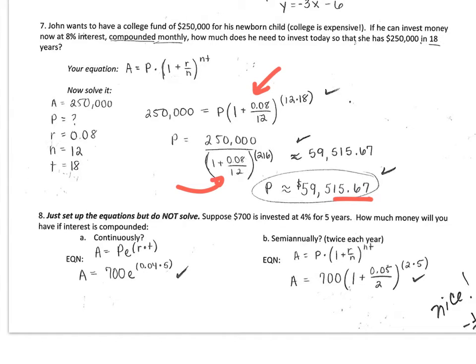For the last piece, you did not have to solve anything. You just wanted to go ahead and set up the equations. This was me testing, do you know which equation to use? For continuously, you use the one that has the base e in it, and P for principal 700, R and T for the other ones. Semi-annually, it even says twice a year, so you knew that that was a 2. For monthly it'd be 12, daily 365. This is semi-annually, so that's twice. Putting those values in there, and it is not continuously, you needed to use this compounded how many times a year formula.